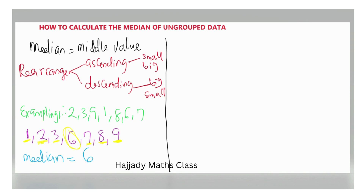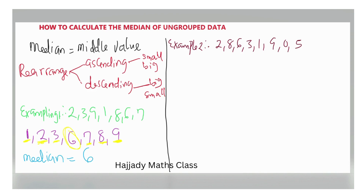I am going to give you an example to show that. Example 2: we have a different data set — 2, 8, 6, 3, 1, 9, 0, and 5. Let's count the number of digits: 1, 2, 3, 4, 5, 6, 7, 8. That is an even number, and we are to calculate the median of this data set.